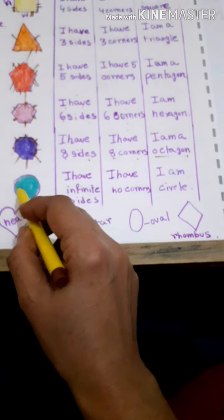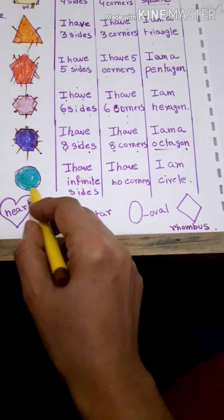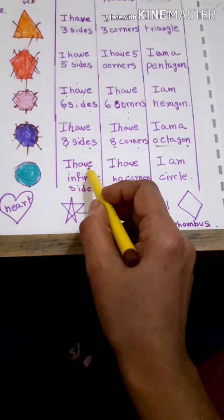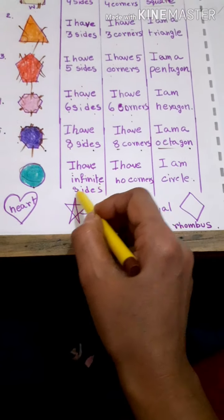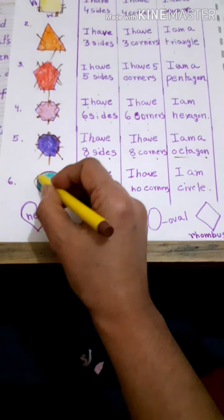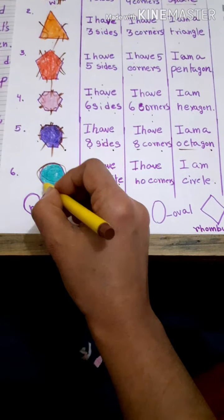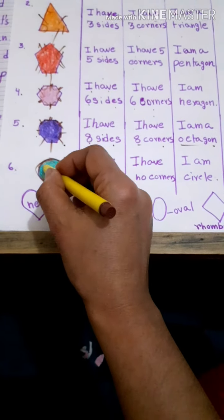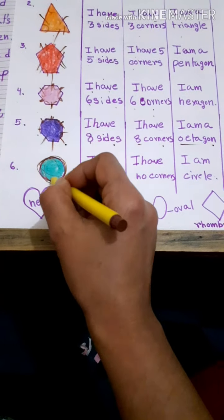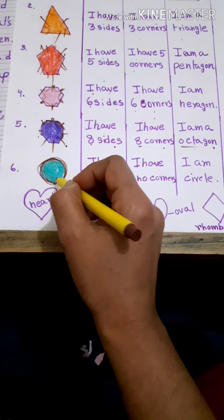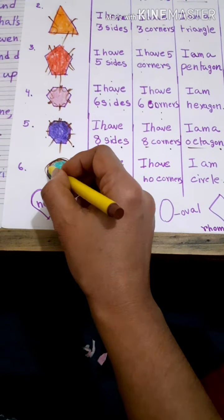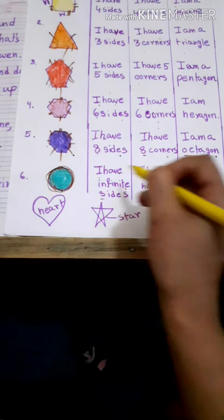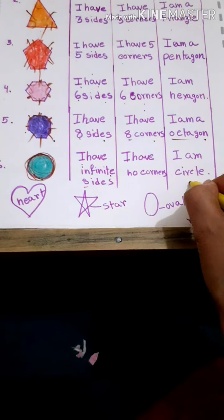Next one — I can't see any corners. I have infinite sides. That means I have so many sides and I have no corners either. So who am I? I am a circle.